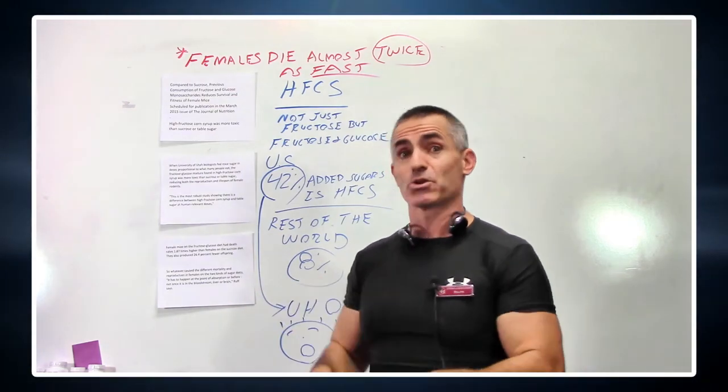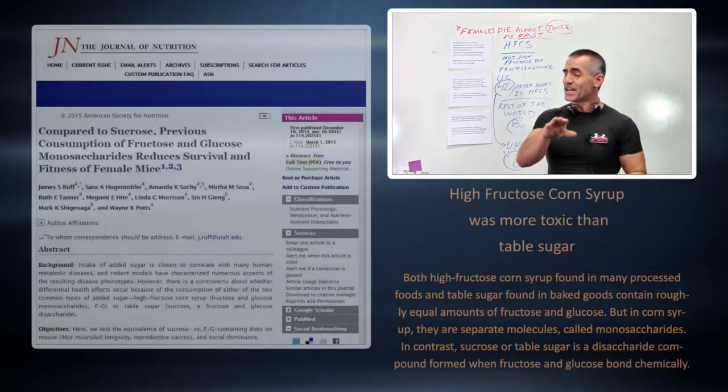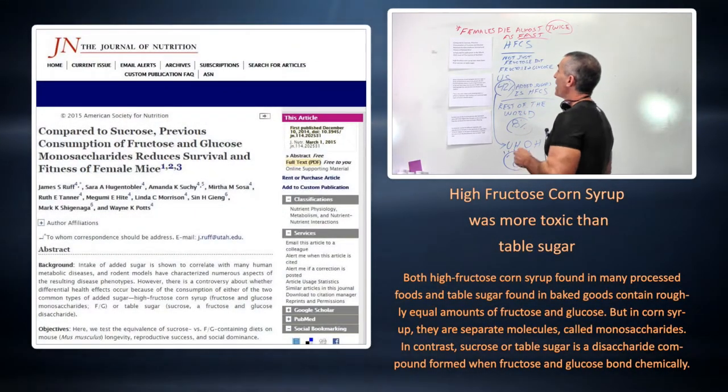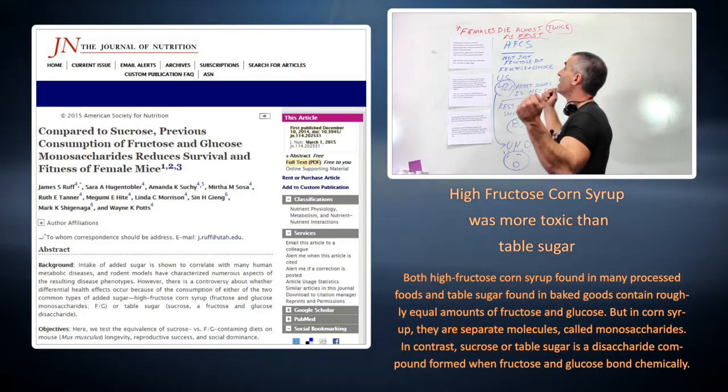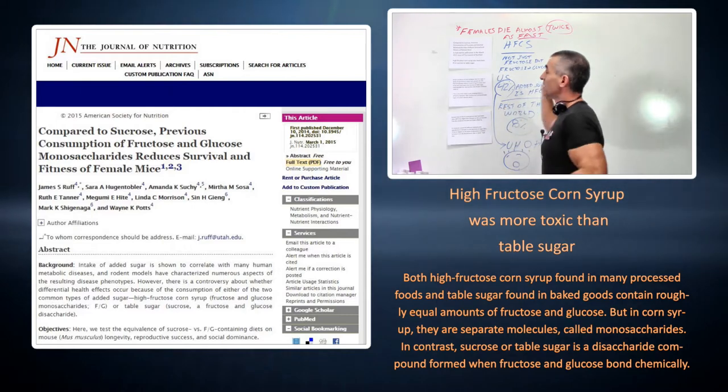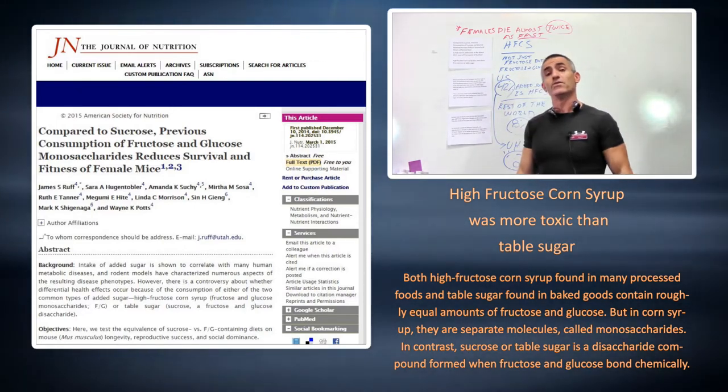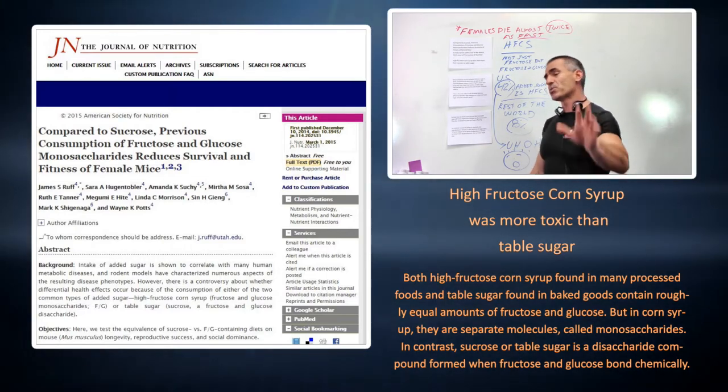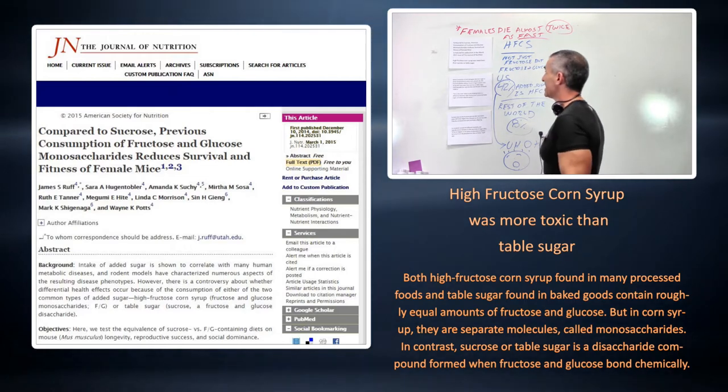In a research article titled 'Compared to Sucrose, Previous Consumption of Fructose and Glucose Monosaccharides Reduced Survival and Fitness of Female Mice,' to be published in March 2014 in the Journal of Nutrition, the press release states that high fructose corn syrup was more toxic than sucrose or table sugar.